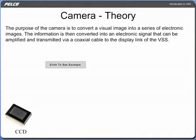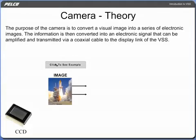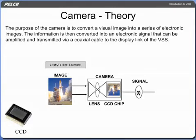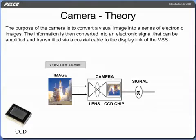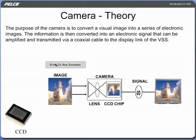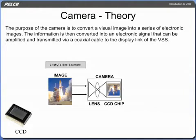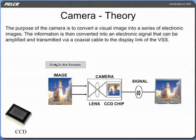The purpose of the camera is to convert a visual image into a series of electronic images. The information is then converted into an electronic signal that can be amplified and transmitted via a coaxial cable to the display link of the VSS.